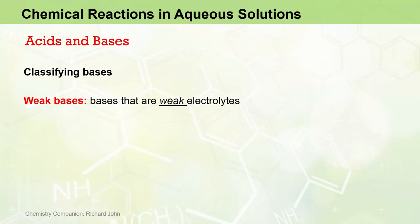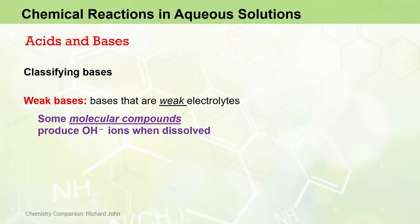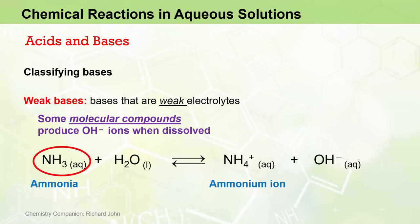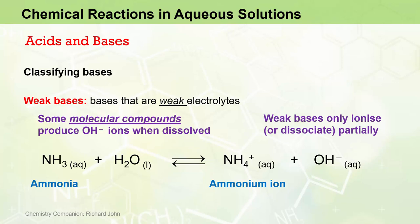Bases that are weak electrolytes are called weak bases. They are often the result of molecular compounds reacting with water to produce the hydroxide ion when dissolved. Ammonia is an example. When dissolved in water, ammonia produces the ammonium ion and the OH-minus hydroxide ion. In this case, the ammonia molecule does not contain any hydroxide ions as part of its structure, yet it is considered a base because it provides a source of hydroxide ions when it is dissolved in and reacts with water. However, we can again see the double arrows in this equation, meaning that these reactions are significant in both directions, with the ammonia molecule only ionizing or dissociating partially, making it a weak base.